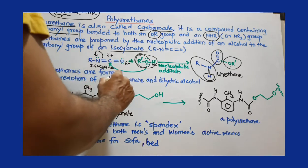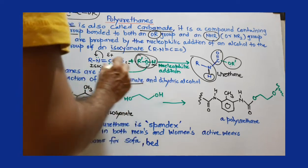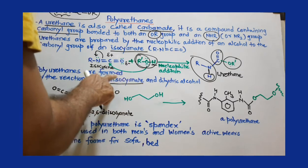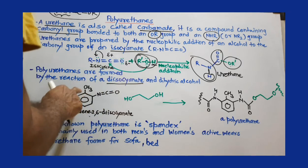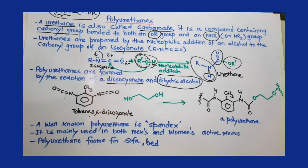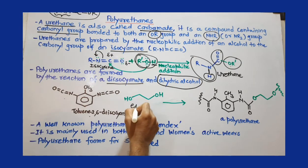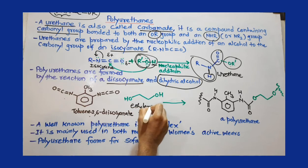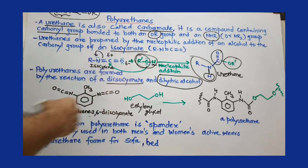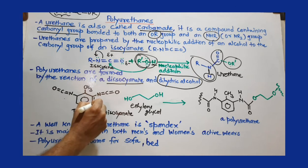Polyurethanes are formed from diisocyanate. We need these N=C=O groups, two groups attached on the same molecule. We are using dihydric alcohol, which is ethylene glycol. We have seen this ethylene glycol in the case of polyester. This is our starting material where diisocyanate groups are attached at the 1 and 6 positions.